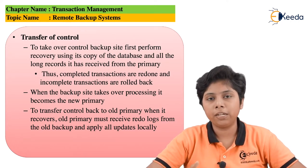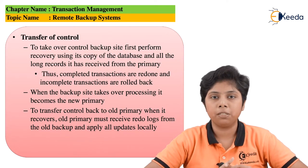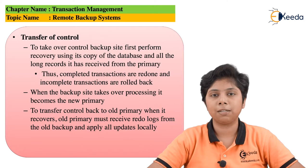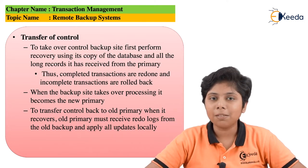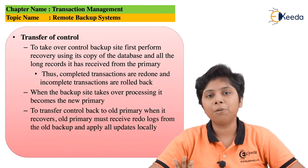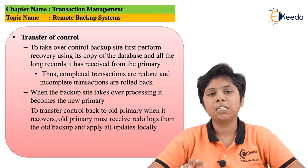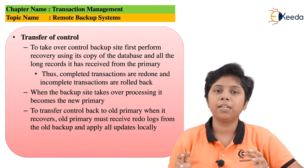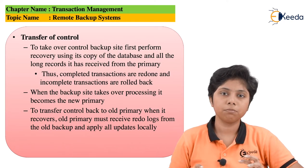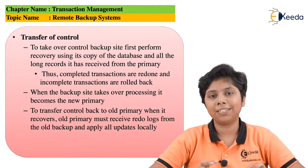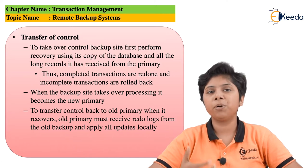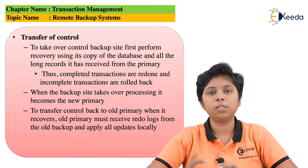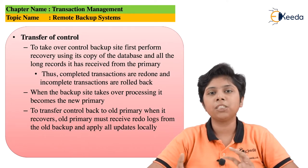When the primary system is repaired or recovered from the error, two things can happen: operation access can be transferred back to the primary system, or the primary system can behave as the remote backup system instead. As the primary system has recovered, we can assume it holds the old database values. The remote system continues as the active one while the primary becomes the backup. Alternatively, we can simulate a problem on the remote system to transfer operation permission back to the primary system.